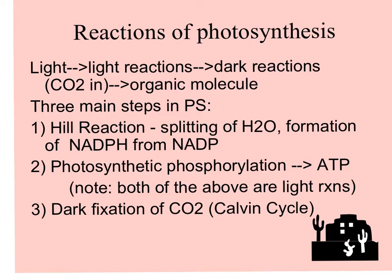Light energy powers the light reactions, which then power the dark reactions. The dark reactions don't require light and often take place in the dark, but not necessarily — they fix carbon dioxide to make organic sugars. There are three main steps: the Hill reaction, where water is split and NADP is reduced to NADPH; photosynthetic phosphorylation, which makes the high-energy molecule ATP from ADP; and the dark fixation of carbon dioxide.